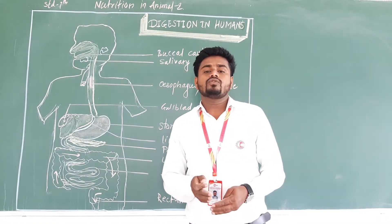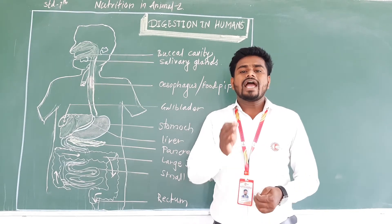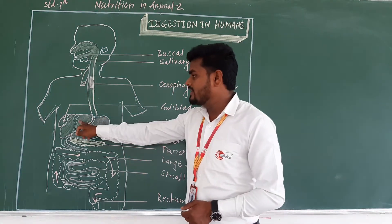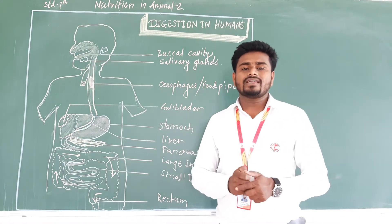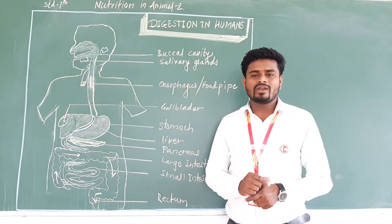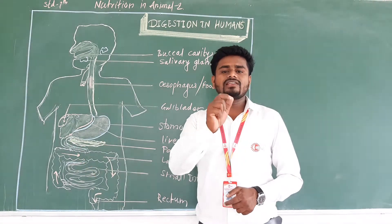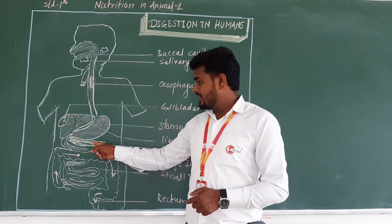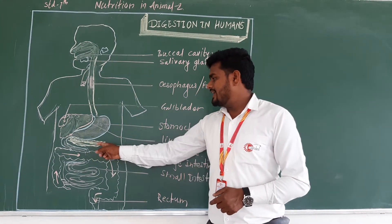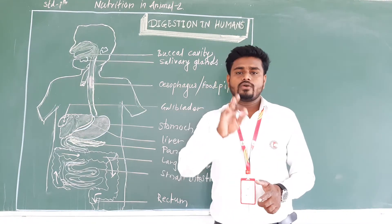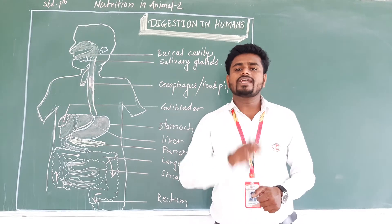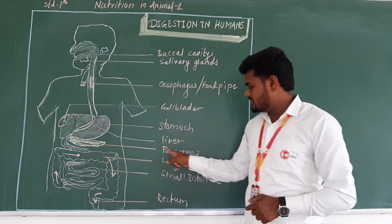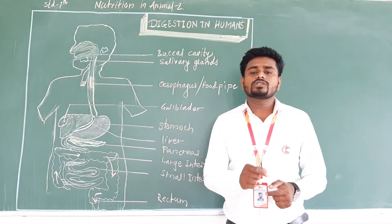When food enters from the stomach to the small intestine, some digestive juices from glands mix into it. The liver is the largest gland in the human body and it secretes bile juice. The pancreas, a yellow-colored muscular part, secretes pancreatic juice. So three digestive juices mix into the food: bile juice from the liver, pancreatic juice from the pancreas, and intestinal juice secreted by the intestine itself.